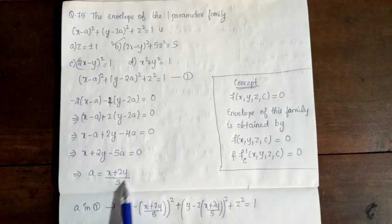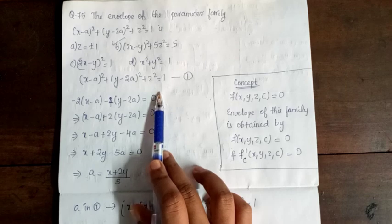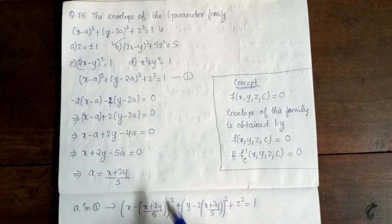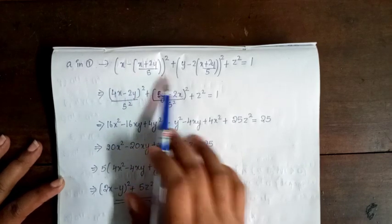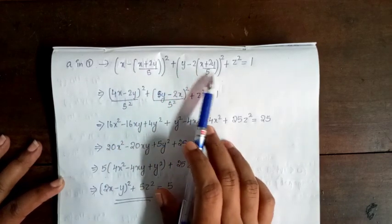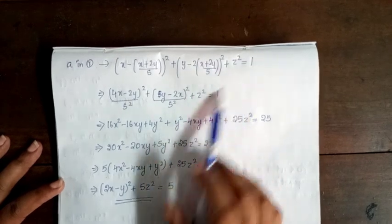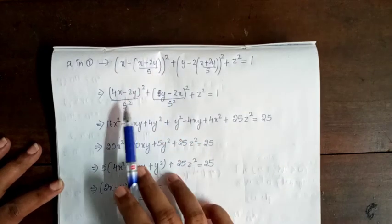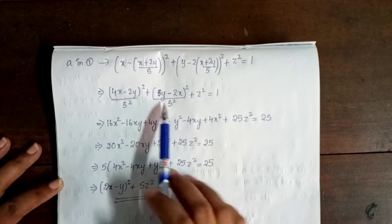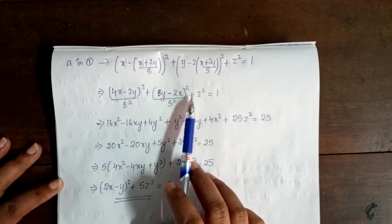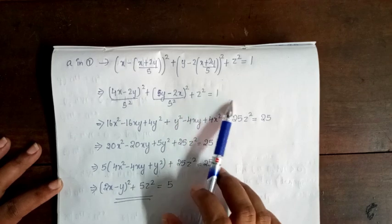Substituting a = (x + 2y)/5 back into the equation: (x − (x + 2y)/5)² + (y − 2(x + 2y)/5)² + z² = 1. Simplifying gives ((4x − 2y)/5)² + ((y − 2x)/5)² + z² = 1.